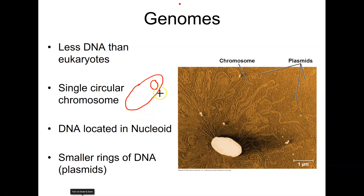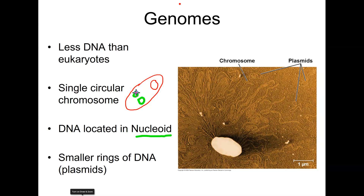That's in contrast to eukaryotes, which have linear chromosomes and multiple pairs of them. The single circular chromosome is located in a region called the nucleoid region. Unlike eukaryotic cells where chromosomes are contained inside a nucleus, prokaryotic cells have no nucleus — just a region where the DNA is found. In addition, bacteria also have smaller rings of independently replicating DNA molecules called plasmids.